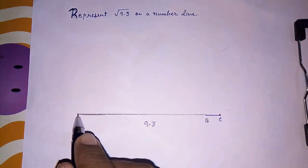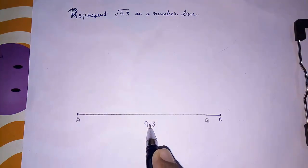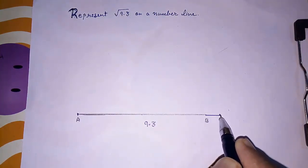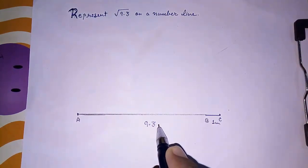Now we have to find, this was our first step, drawing a line segment AB measuring 9.3 cm. Then we have to extend B to C 1 cm. This is 9.3 cm.